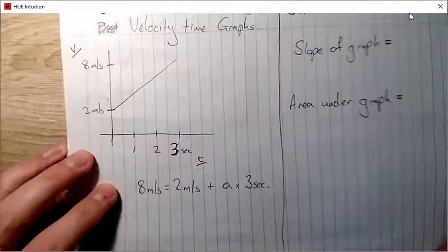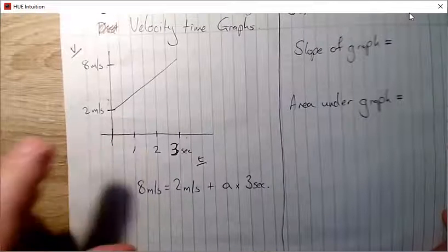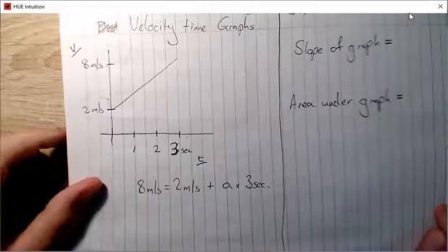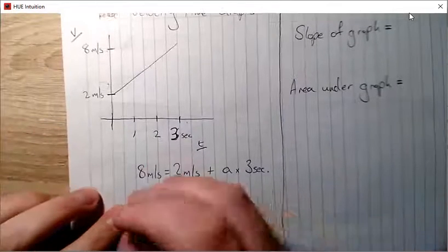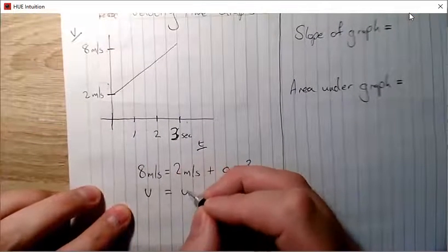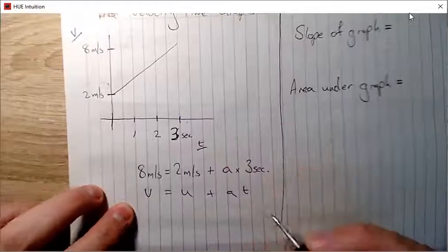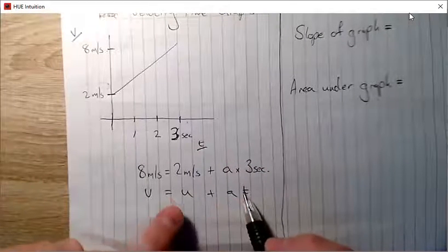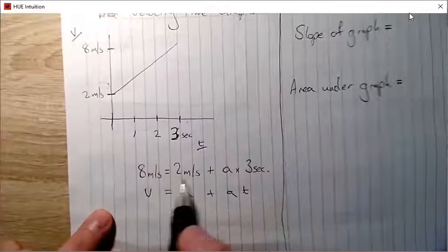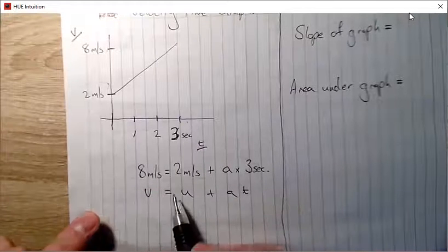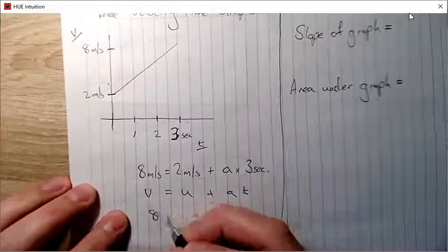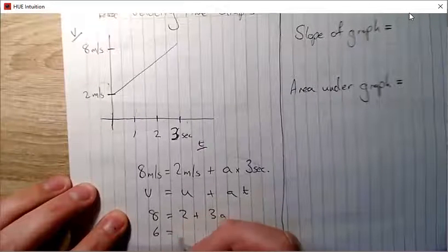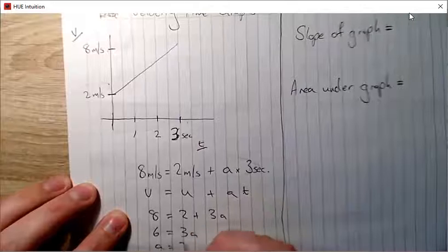A few things about a velocity-time graph. First, if you wanted to find the acceleration, you could use v = u + at — final velocity equals initial velocity plus acceleration multiplied by time. Solving that equation: eight equals two plus three a, bring the two over, you get six equals three a, so the acceleration is two meters per second squared.